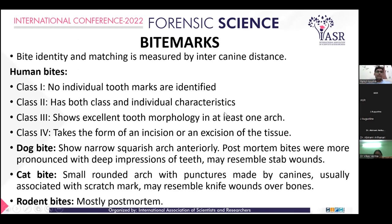Coming to bite marks, bite identity and matching is measured by intercanine distance. Human bites are classified into four classes. Class one: no individual tooth marks identified. Class two: has both class and individual characteristics. Class three: shows excellent tooth morphology in at least one arch. Class four: complete, taking the form of an incision or excision of tissue.